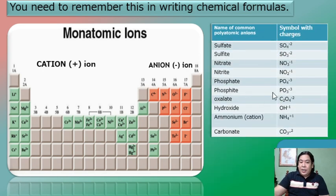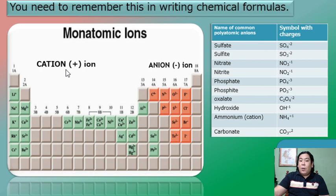In this data table of the common polyatomic ions, we have sulfate, sulfite, and others you are familiar with. A monoatomic ion has only one symbol, while a polyatomic ion has more than one. Ions have a charge.